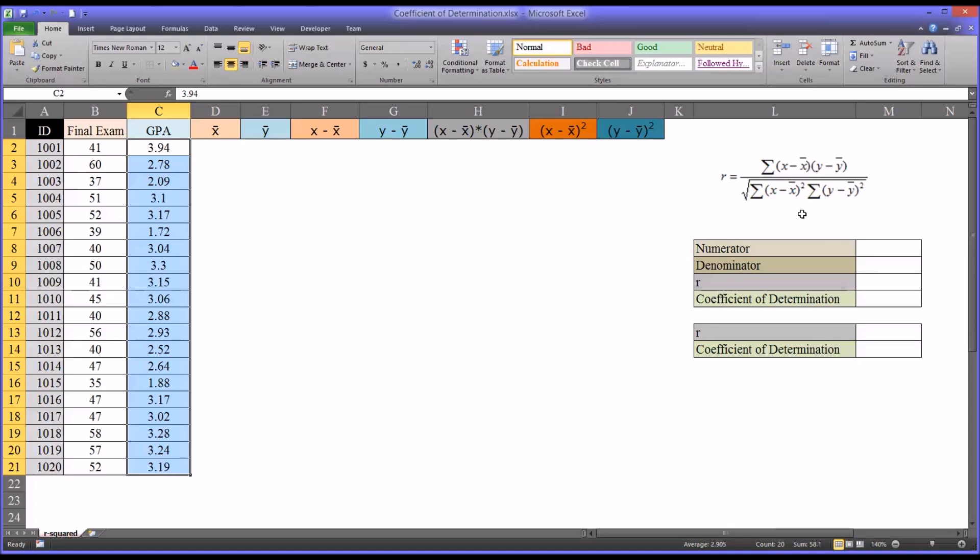Looking at the denominator, you have the same thing. You have the observation minus the mean for one variable, except that's squared, and then they're added together. And then the observation minus the mean for the other variable squared, added together. These two values are multiplied together, and then we take the square root of that. And that represents the denominator. Of course, r equals the numerator divided by the denominator.